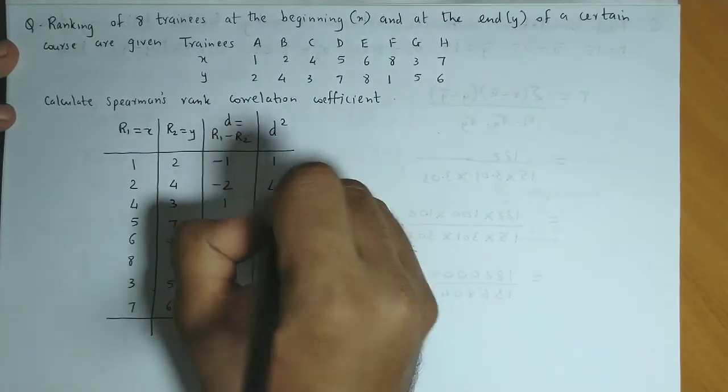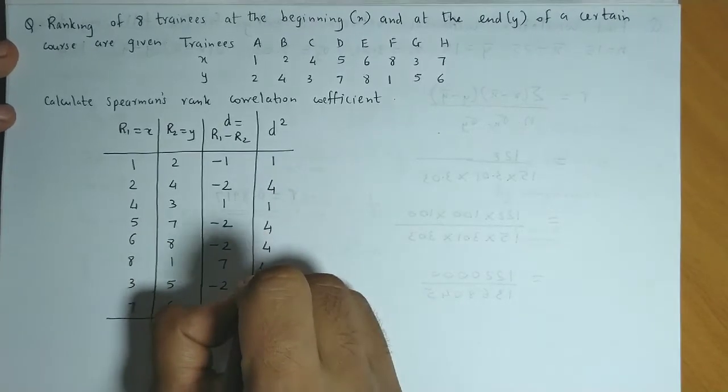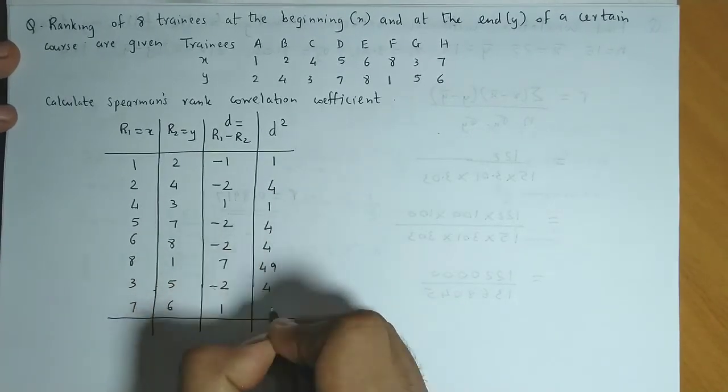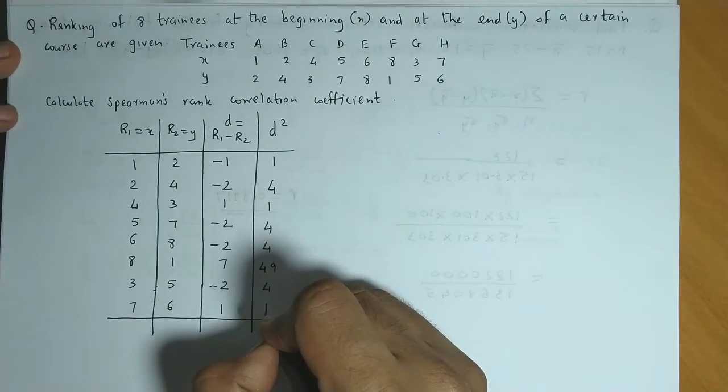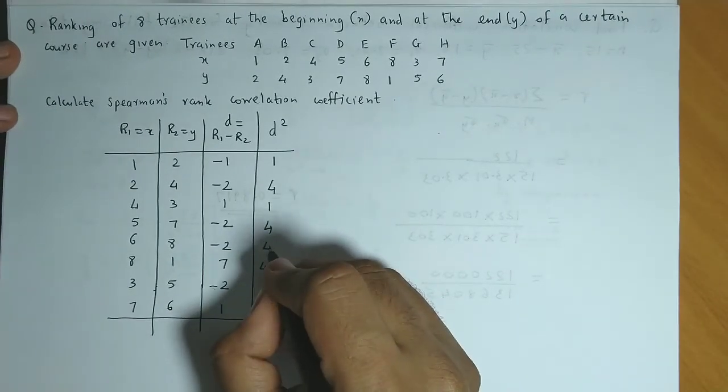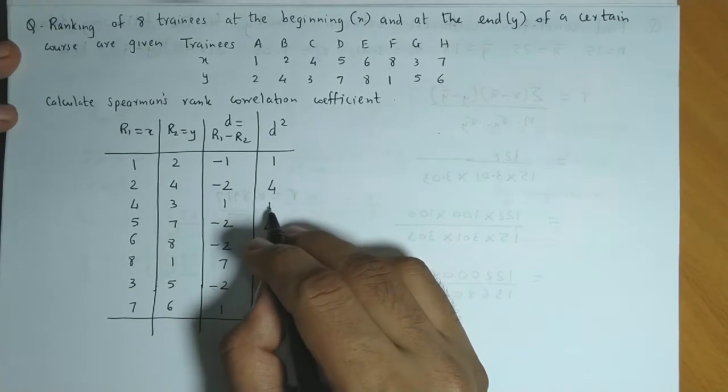Now let us square the differences. So we have 1, 4, 1, 4, 4, 49, 4, and 1. So 49 and 1 is 50, 54, 58, 58 and 4 is 62, 63, 64 and 4, that is 68.